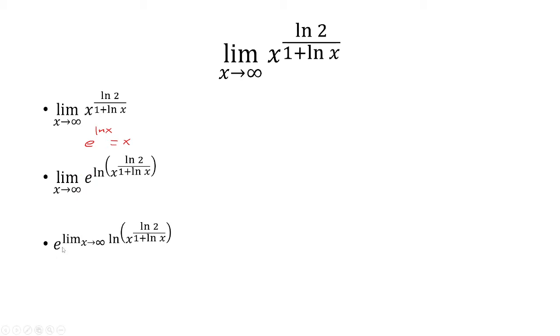And so the natural log brings the exponent out in front. And now the ln of 2 here is a constant so I can pull that outside the limit.